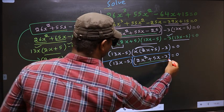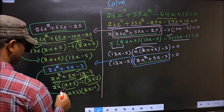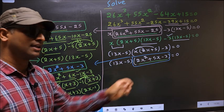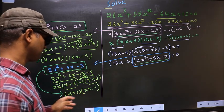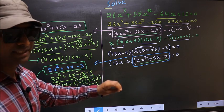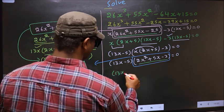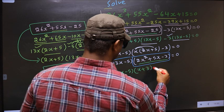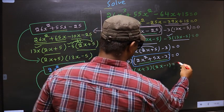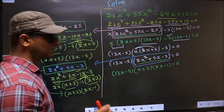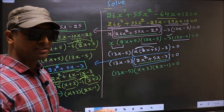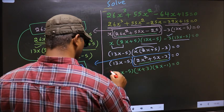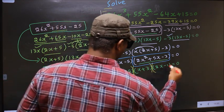Now, in place of this quadratic, we should write this. In place of this quadratic, now I will write this. So this equation will change to 13x minus 5, times x plus 3, times 2x minus 1, equal to 0. They told us to solve, which means we should get the values of x. And over here, we got product of brackets equal to 0.